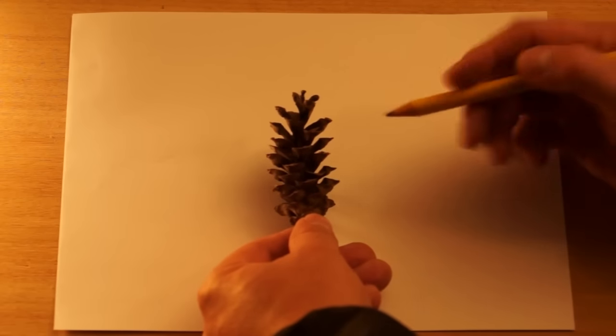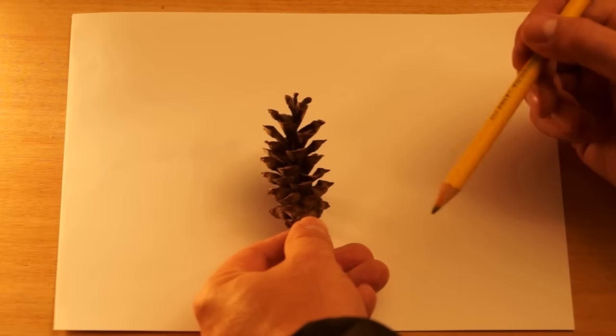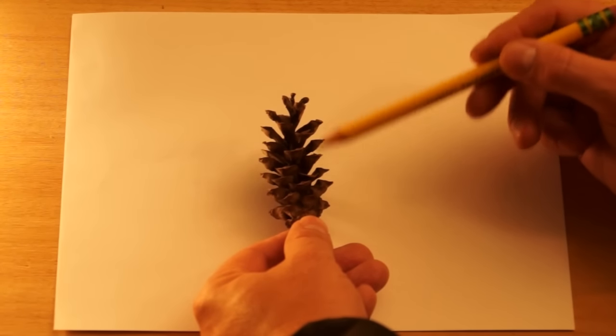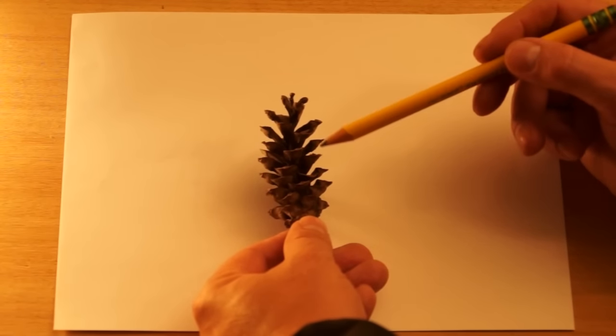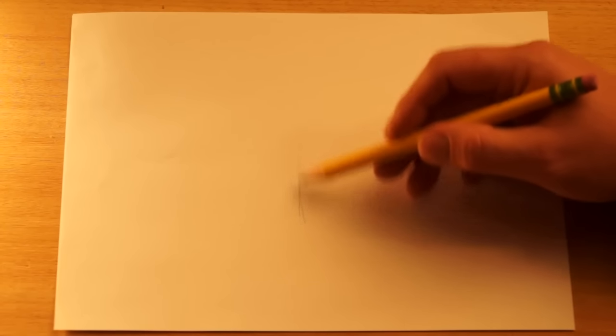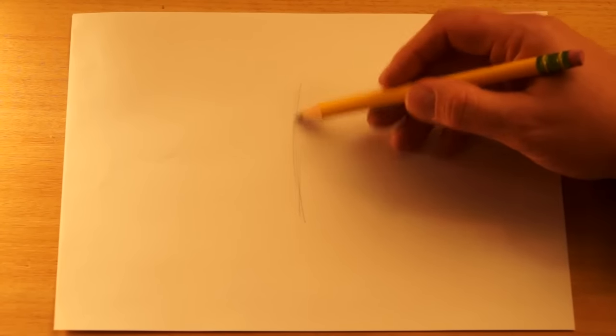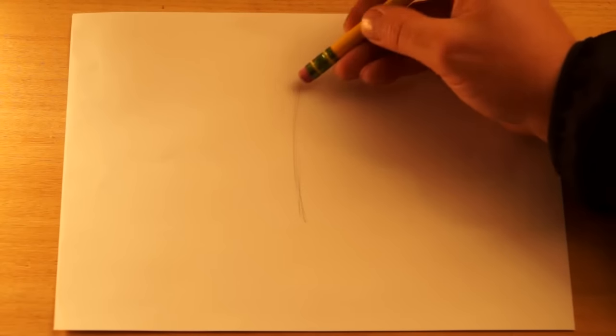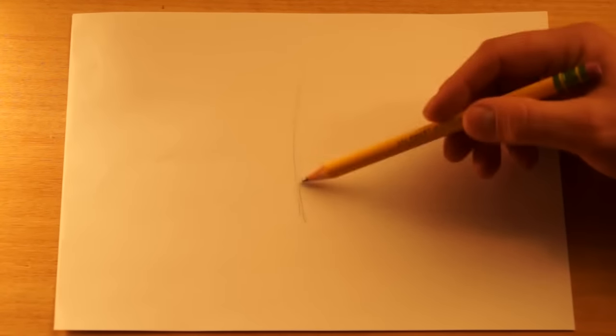For this drawing, I'm looking at a pinecone that I picked up outside. And I'm going to draw kind of a simplified version of this. But we're going to start off with a line down the center. And you can curve it a bit if you'd like to. It should be very light because we're going to be making changes as we go along.